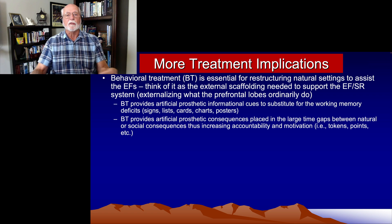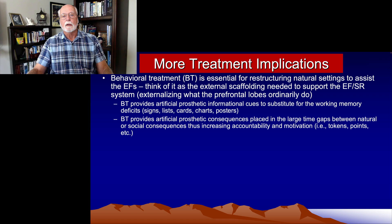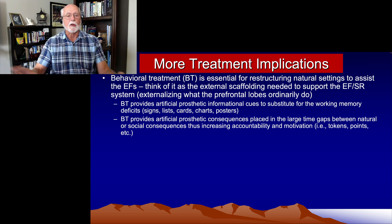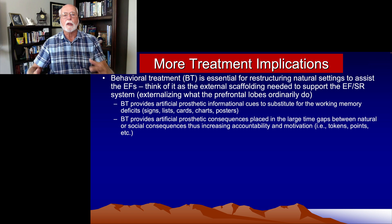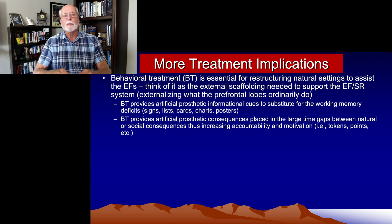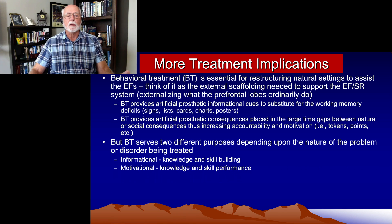Behavior therapy provides artificial stimuli in the environment — sticky notes, cards, reminders, cues, signs — to substitute for the deficit in working memory and mental representations. It also provides artificial consequences, sprinkling in consequences that don't ordinarily occur in these environments: points, tokens, privileges, rewards, or in the case of adults, social accountability where we make ourselves accountable to others. But those are artificial means of correcting for this performance problem. As long as we put them there and keep them there, they may be helpful — but the minute you start to remove them, things go back to the way they were before.